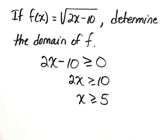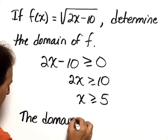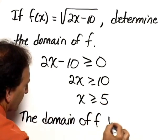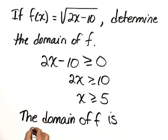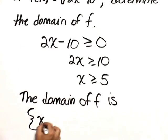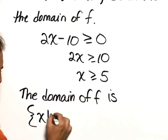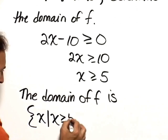So we write the domain of f is, in set builder notation, x such that x is greater than or equal to 5.